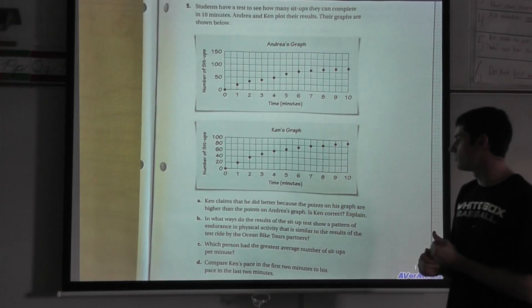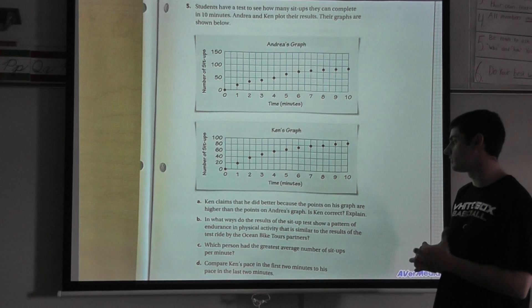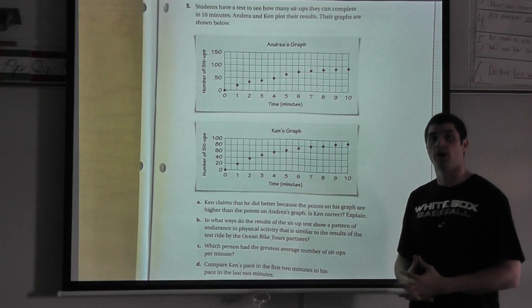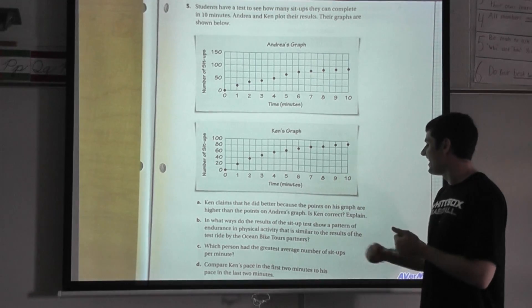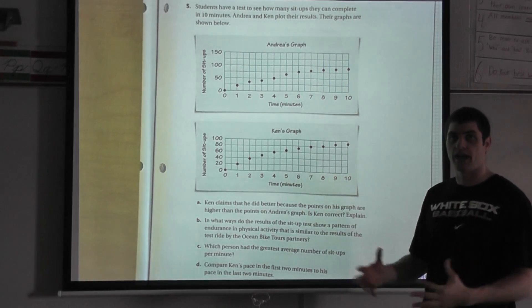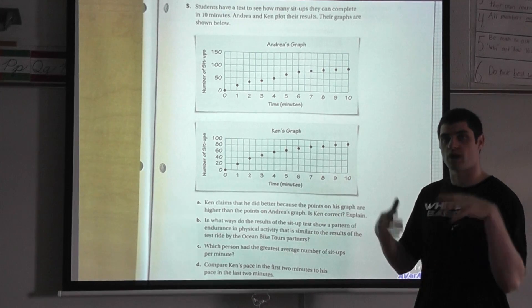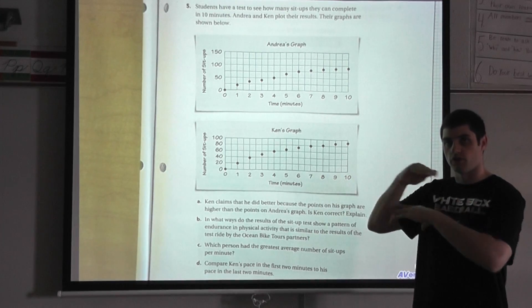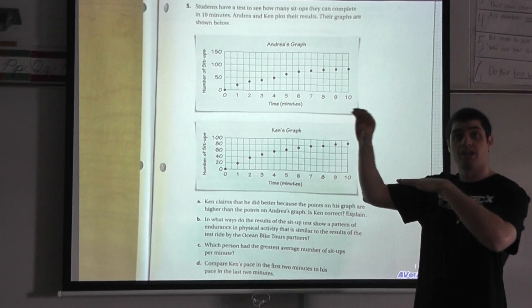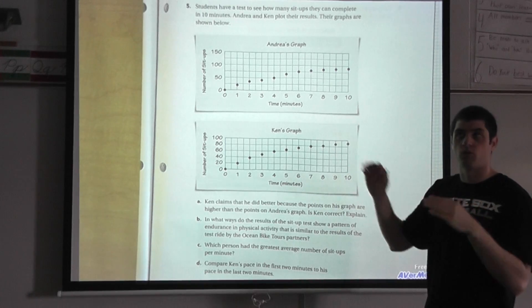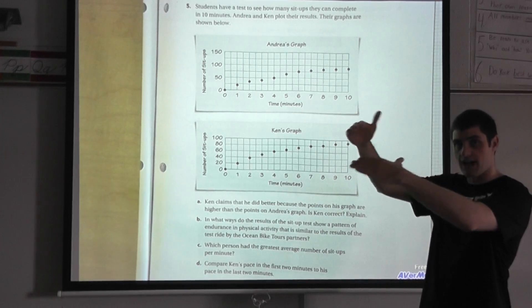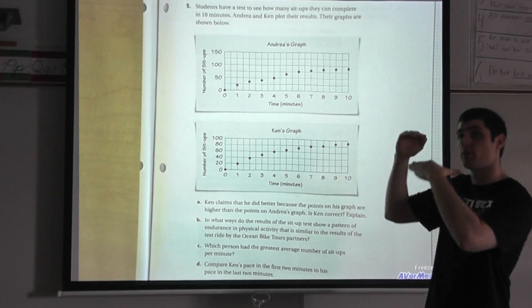Part B: In what ways do the results of the sit-up test show a pattern of endurance and physical activity that is similar to the results of the test ride by the Ocean Bike Tours partners? That was a lot to talk about there. In our example here for the Ocean Bike Tours, they were talking about the rate. How did the rate change? I had you look at the table. In the first half hour, they were able to ride eight miles. In the next half hour, the total was 15, but they rode seven miles in that half hour. The next one was a four mile increase each time going through. We were looking at the table to figure out the rate, how many miles they went per half hour.